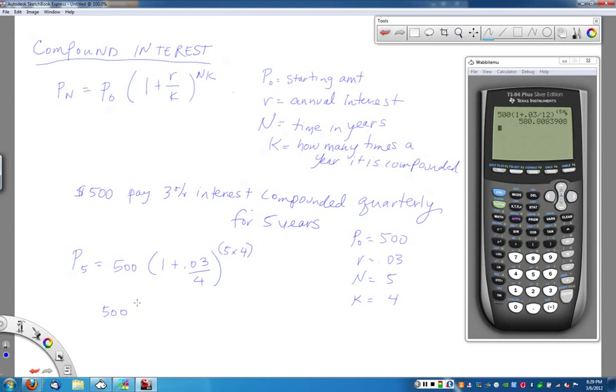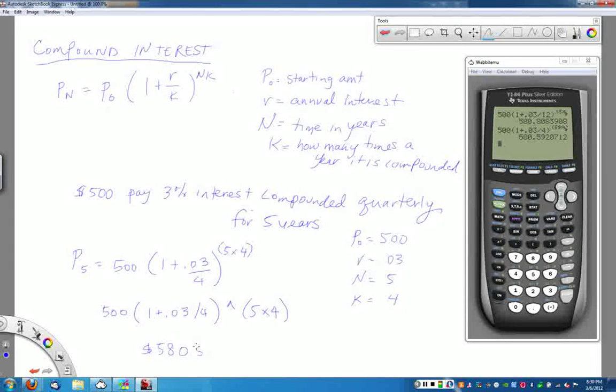Typing it in your old school calculators, 500 parentheses 1 plus .03 divided by 4. Close the parentheses. Use your little caret button. 5 times 4 in parentheses, so both the 5 and the 4 get caught up in there. So when I type this here, it's going to be real similar. 500 times 1 plus .03 divided by 4. Close the parentheses. And then I'm taking it to the 5 times 4 power. So 5 years, 4 times per year. And notice in this particular case, I end up with $580.59.